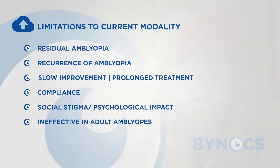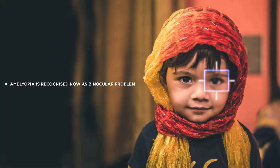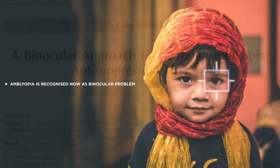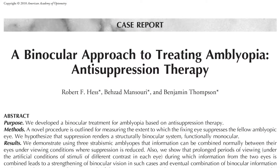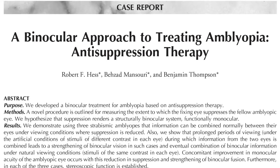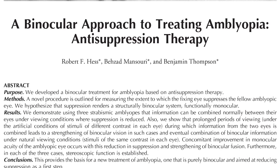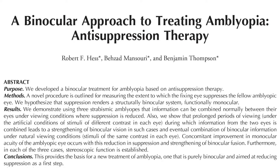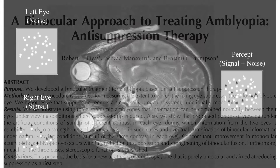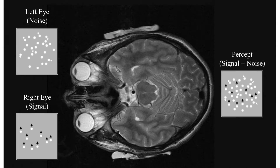It is ineffective in adults. Amblyopia is recognized as a binocular problem, and new treatment modalities aim at treating both eyes together. The brain is neuroplastic and can be trained even in adults. Dichoptic therapy is now emerging as an effective option in the treatment of amblyopia. In dichoptic therapy, a contrast-adjusted stimulus is presented to each eye.